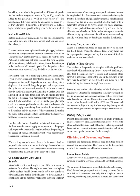Use the collective and throttle to maintain altitude and RPM. As torque increases, apply more pressure to the proper anti-torque pedal to maintain longitudinal trim. Depending on the degree of bank, additional forward cyclic pressure may be required to maintain airspeed. When rolling out of a turn, the cyclic is moved back to perpendicular to the horizon, which brings the rotor back to level. Lead or lag on the rollout is necessary to complete the maneuver on the desired heading.